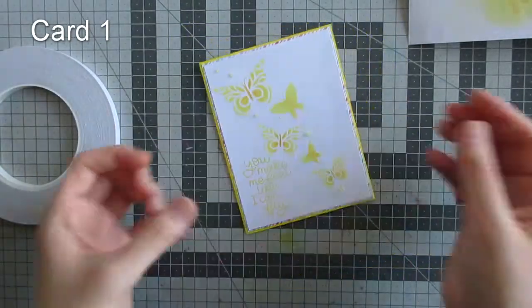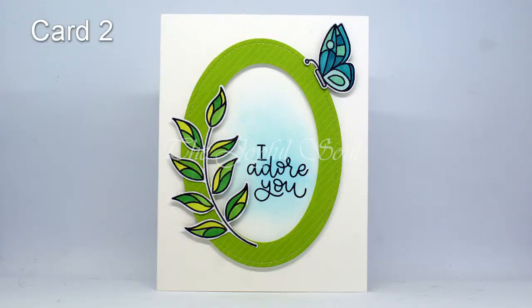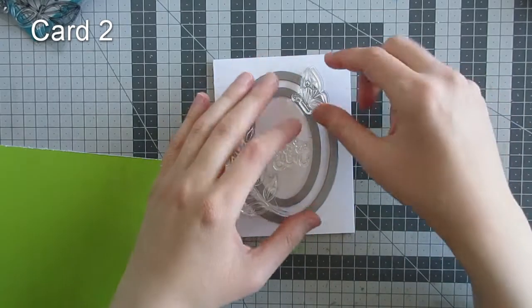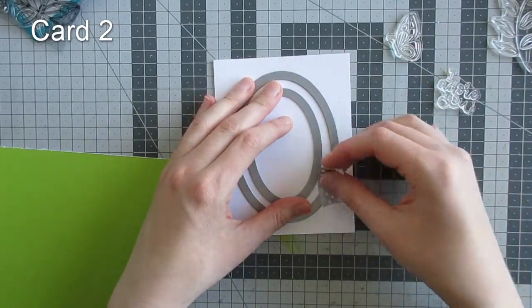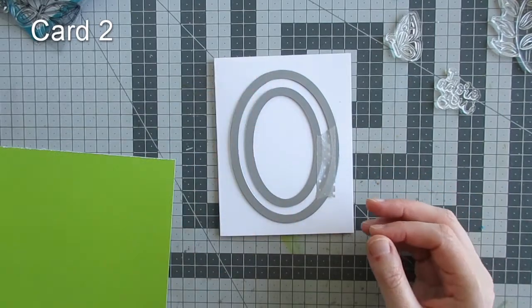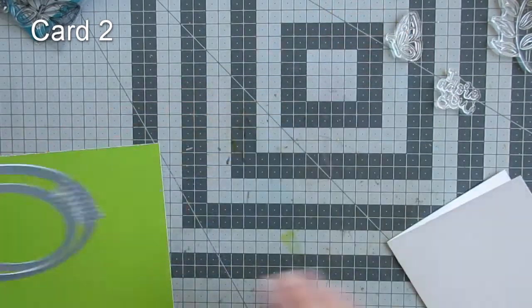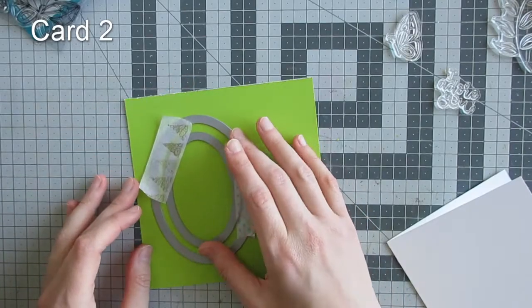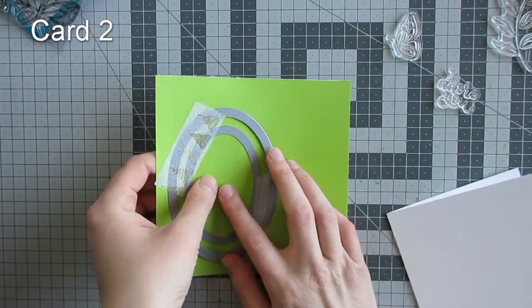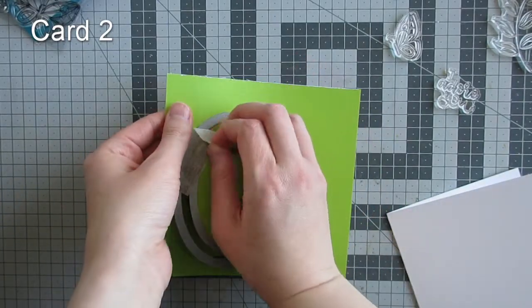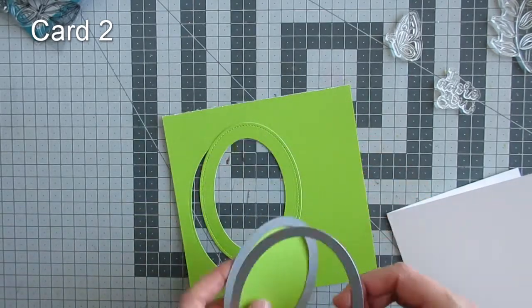My second card: I decided to create a frame from another piece of the Really Rainbow papers, this time using green paper. I made a frame using two Lawn Fawn stitch oval dies. I set aside the center portion to use on a later card.